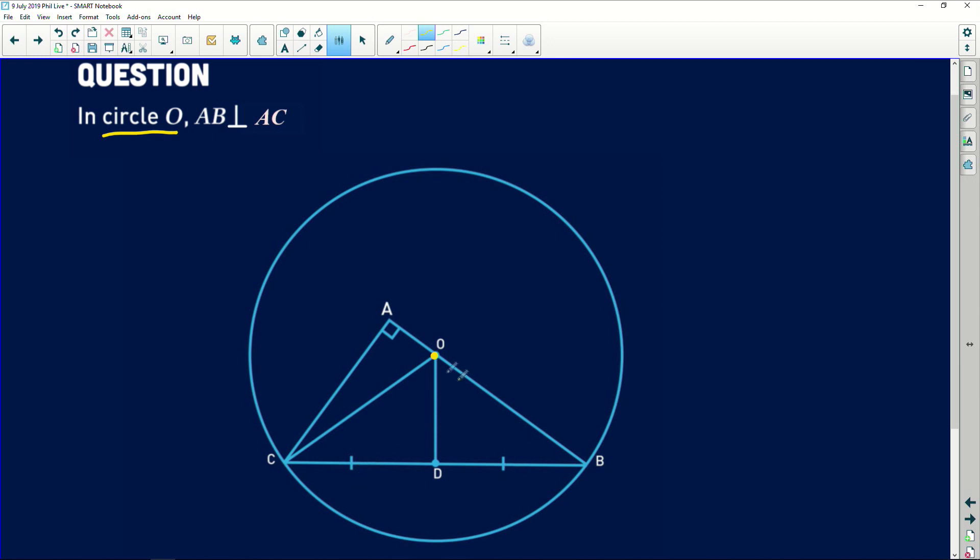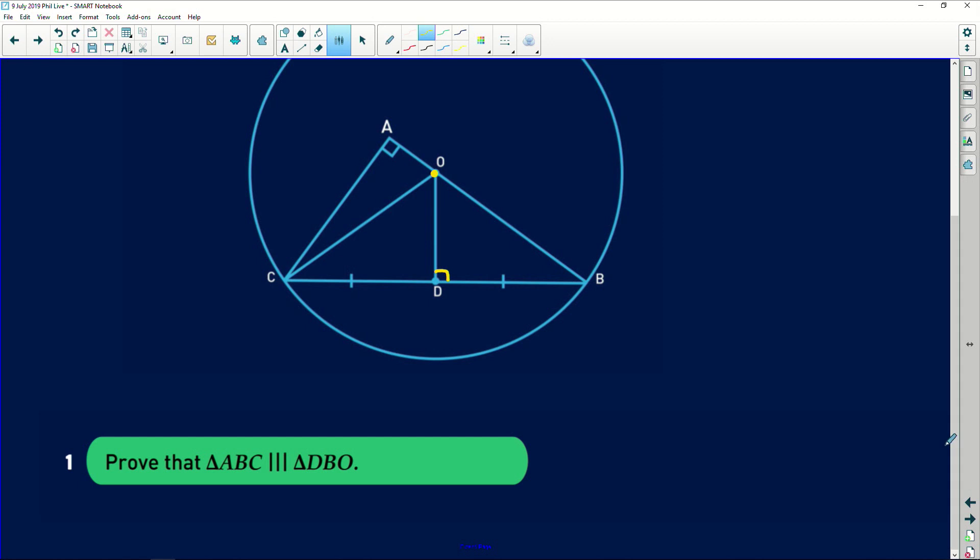So before we get into the question, very important to note the center of the circle because the moment you do, you have radii coming off of that center, which are very important. Also, the moment you see a line coming through the center of a circle to a chord, there are going to be relationships, especially if it bisects the chord. Remember, line through a center of the circle to a chord and bisects the chord automatically means that there's a perpendicular relationship there. Euclidean geometry theorems.